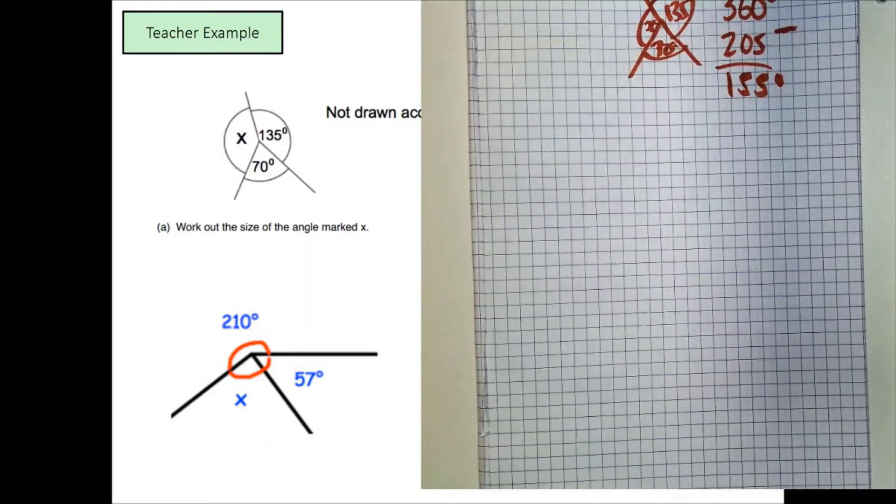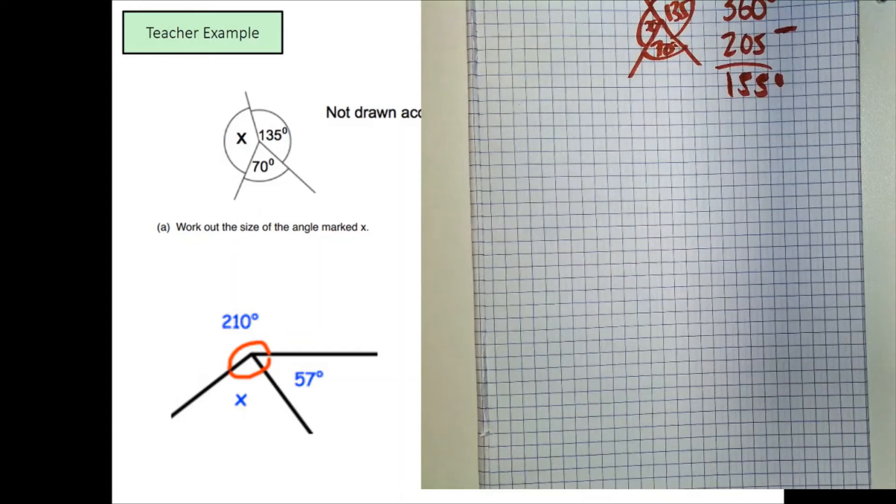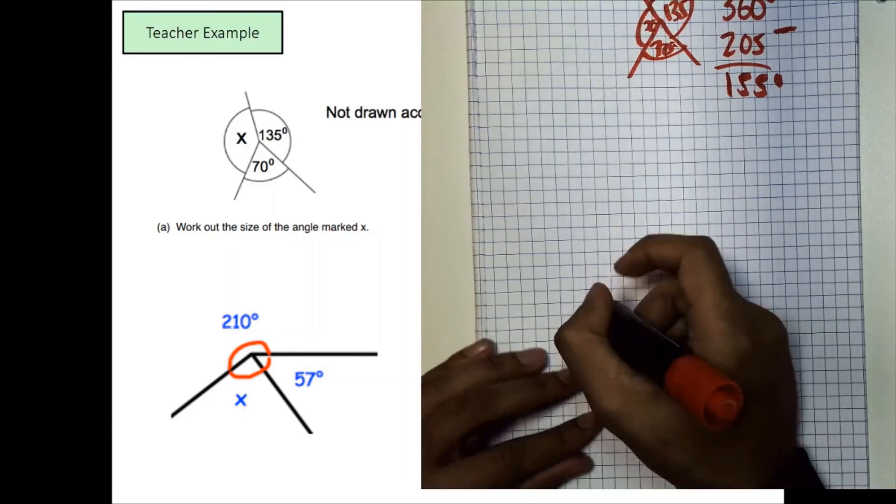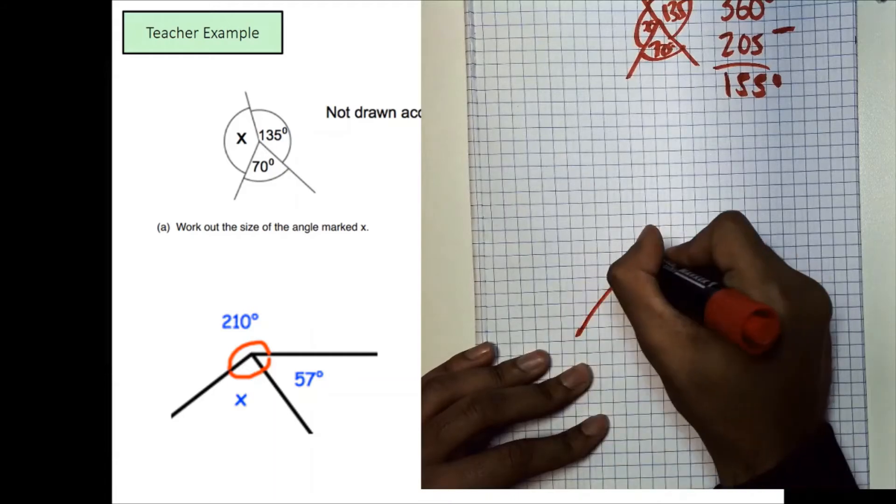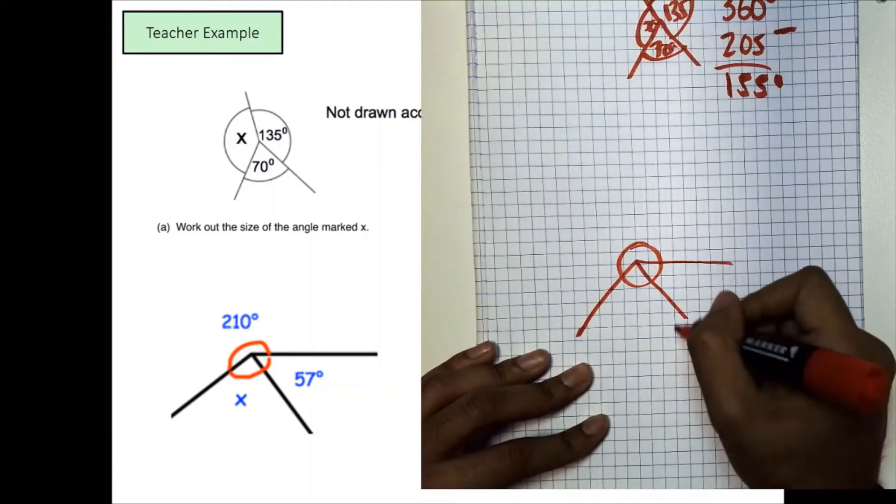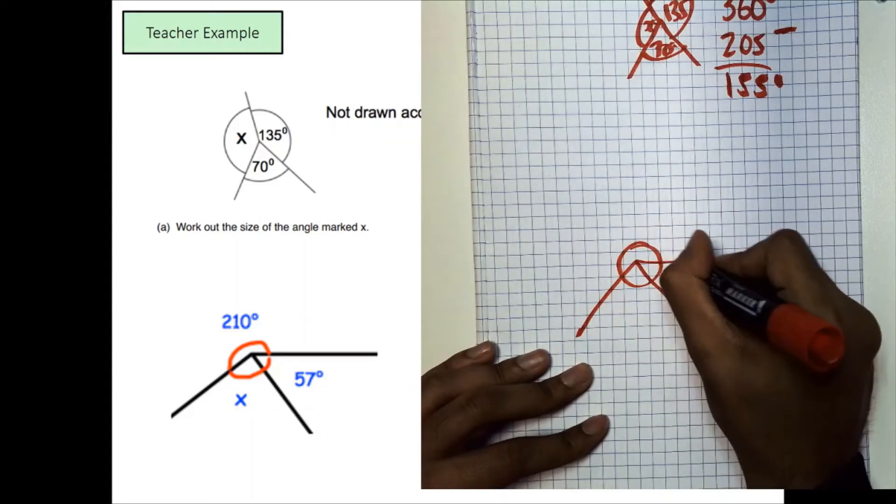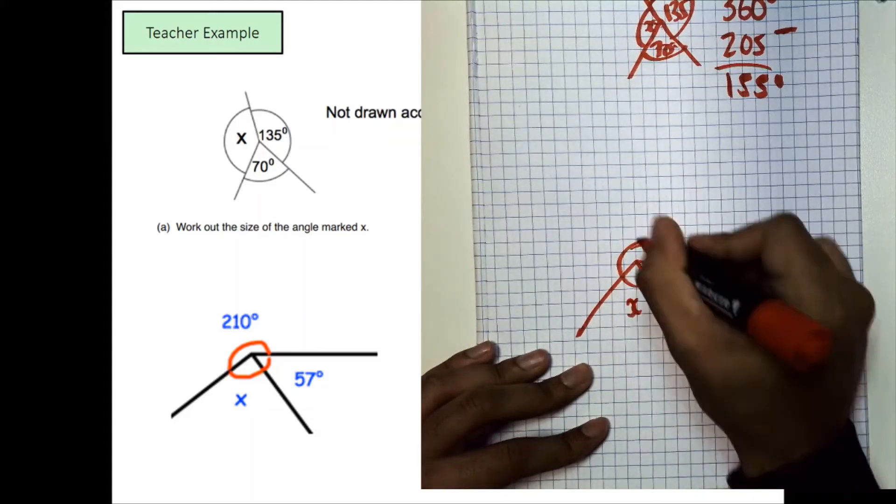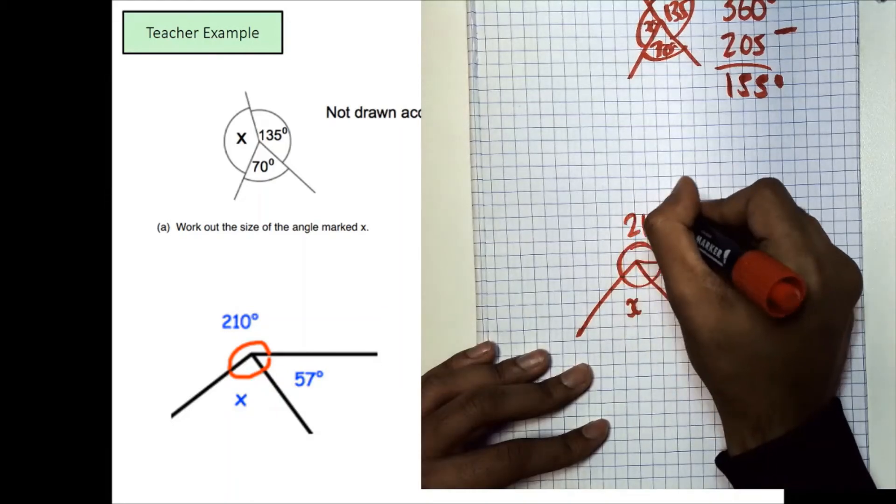Okay, good. Now, let's look at the question below. We're given an angle that looks something like this. Of course, we have our angles and then we have this one as 57 degrees. We have this one as x, something we don't know, and we have this one as 210 degrees.